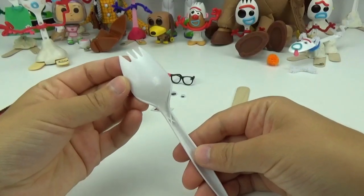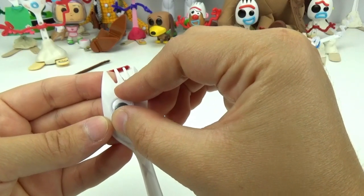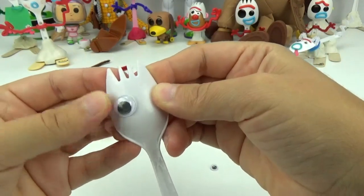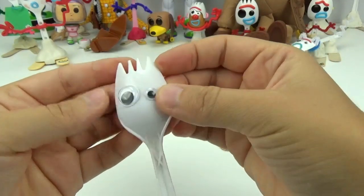The first step to creating Forky's grandpa are going to be his eyes. Like Forky, he will have one eye bigger than the other one. Perfect!